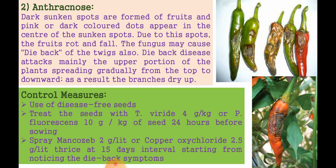Control measures for anthracnose: collect and destroy all diseased fruits as soon as noticed. Use disease-free seeds treated with Thiram at 2 grams per kg, Trichoderma viride at 4 grams per kg, or Pseudomonas fluorescens at 10 grams per kg, 24 hours before sowing. Spray Zineb 0.25%, Mancozeb 0.25%, or Carbendazim 1%. The first spraying should be given just before flowering, the second at the time of fruit formation, and the third spray 15 days after the second spray.